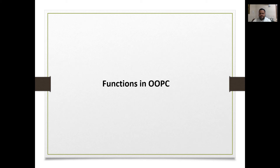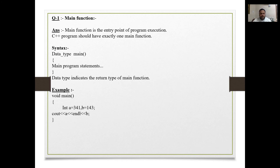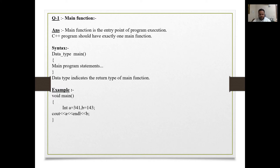Today we will start with functions in OOP C++. The main function is the entry point of program execution in C++. A program should have exactly one main function, like void main or int main — it should contain only one main function.